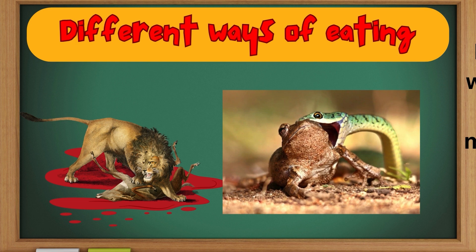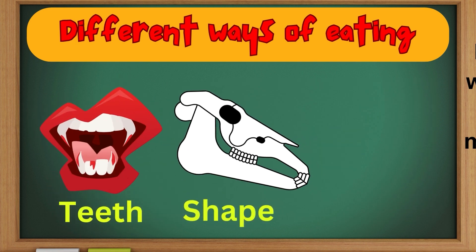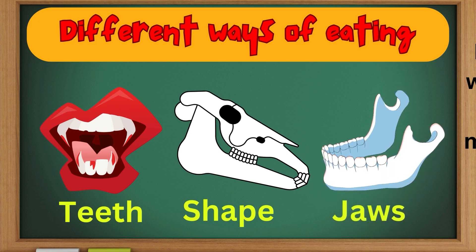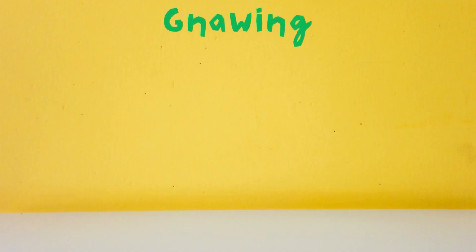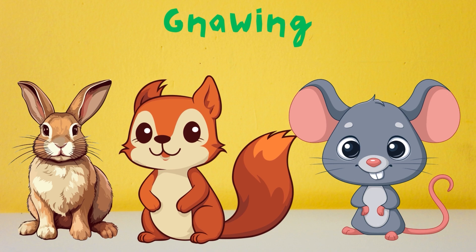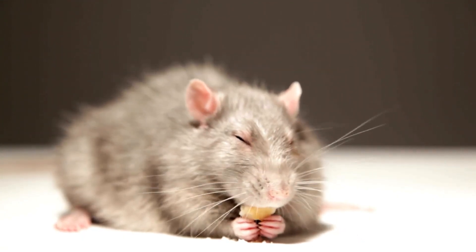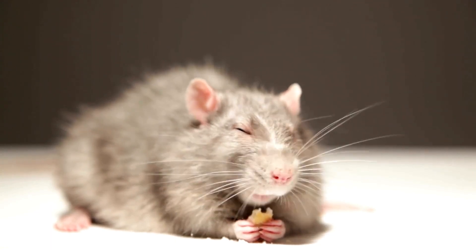Different ways of eating. Different animals eat in different ways. The feeding habit of animals depends on the teeth, shape of mouth, and jaws, and the kind of food they eat. Gnawing animals like rabbit, squirrel, and rat have sharp front teeth in both upper and lower jaws to cut nuts, seeds, or fruits.